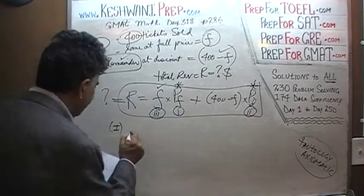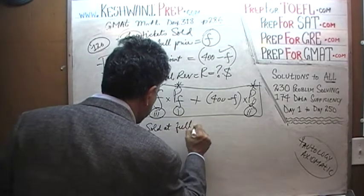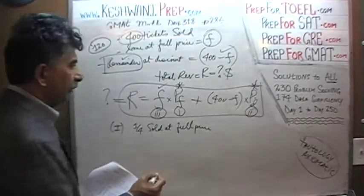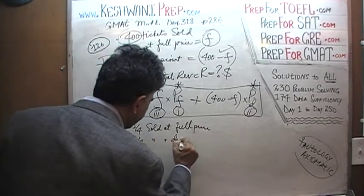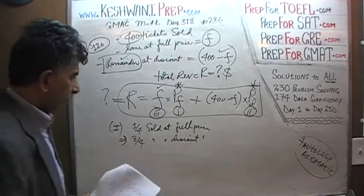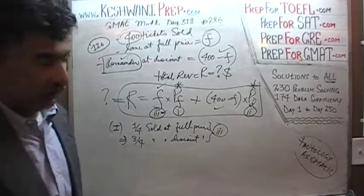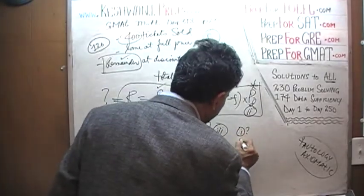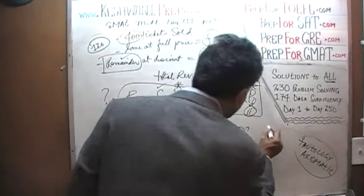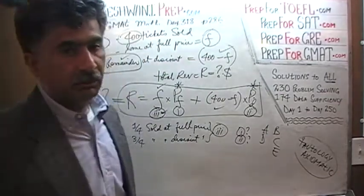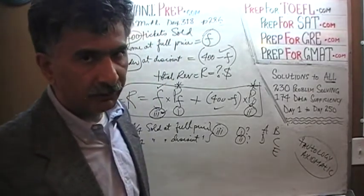The first statement tells us that one-fourth were sold at full price, which implies three-quarters were sold at discount. This takes care of the third piece of information — how many were sold at each price. However, we still do not know either price. The first statement does not give us the prices, so it is not sufficient by itself. The answer cannot be A or D.